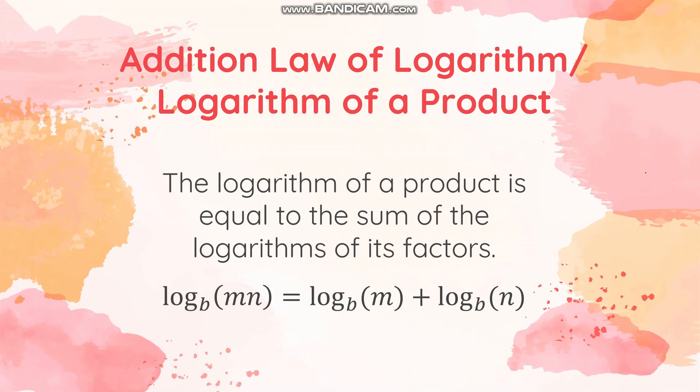The first law of logarithm is what we call the addition law of logarithm, or logarithm of a product. The logarithm of a product is equal to the sum of the logarithms of its factors. When dealing with the laws of logarithms, you just have to look at the argument. For the first one, the argument is factorable — for example, the argument is MN. Once the argument is factorable, you can factor it out and separate the factors into different logarithmic expressions, connecting them with addition. Getting the logarithm of the product of two numbers is just the same as the sum of the logarithms of the factors itself.